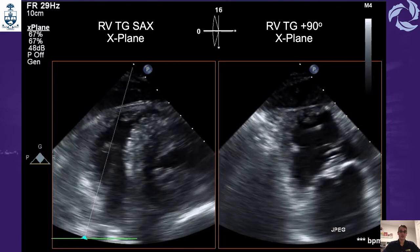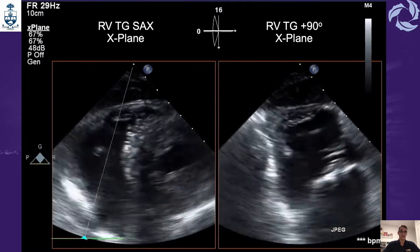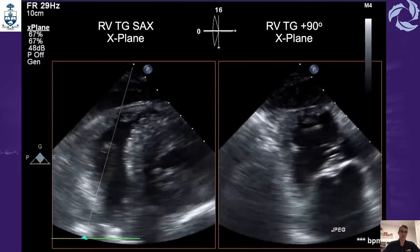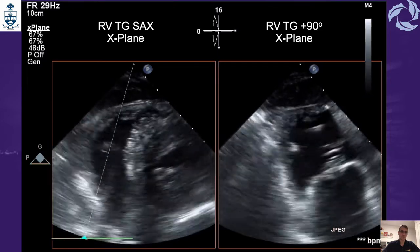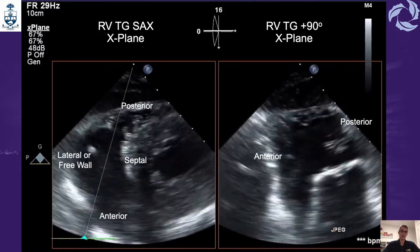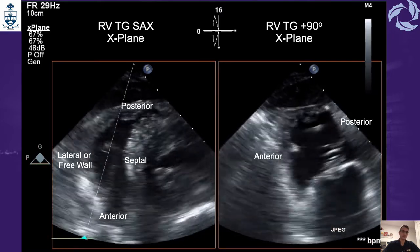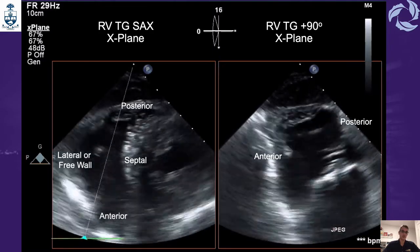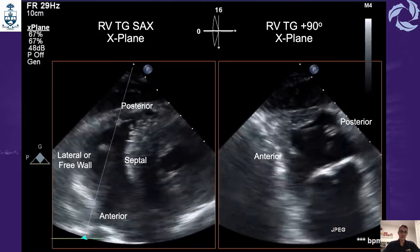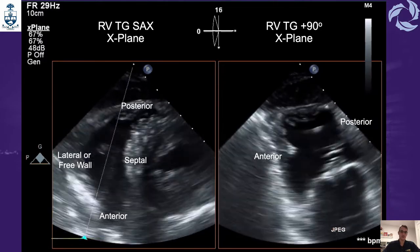From the transgastric short axis modified view over the right ventricle, the same thing can be done. Looking at the left side of the screen we see the RV transgastric short axis. We put the X-Plane in the middle of the right ventricle and generate an image which is 90 degrees from the previous one. In the transgastric short axis we can see the anterior, posterior, septal, and lateral free wall of the right ventricle, while the 90-degree plane shows the anterior and posterior walls of the RV.